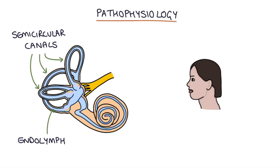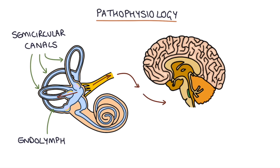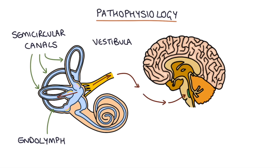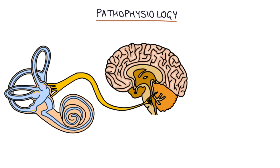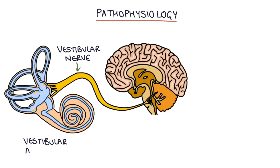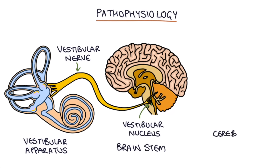This sensory input of shifting fluid is transmitted to the brain by the vestibular nerve, and it lets the brain know that the head is moving in a particular direction. The vestibular nerve carries signals from the vestibular apparatus to the vestibular nucleus in the brain stem and also to the cerebellum.